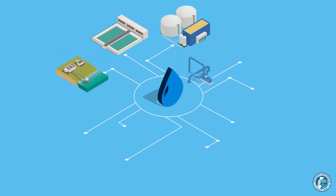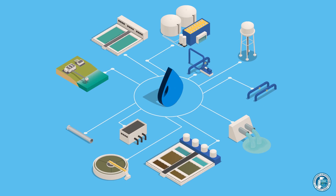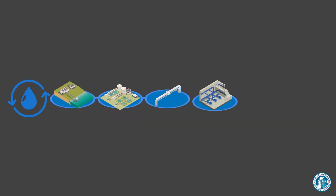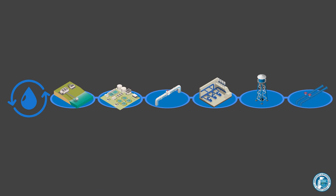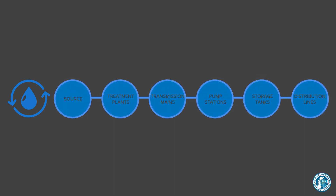The clean water provided by water infrastructure is essential to the overall health and well-being of society. Drinking water systems are particularly critical for providing reliable and accessible clean water for communities. From source to treatment to distribution, a drinking water system is dependent on many other infrastructure services to operate.